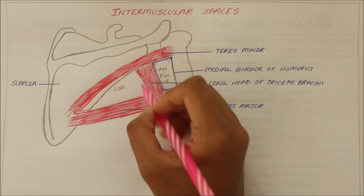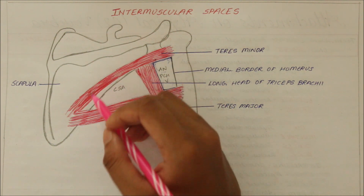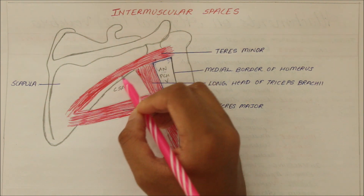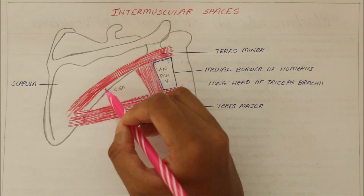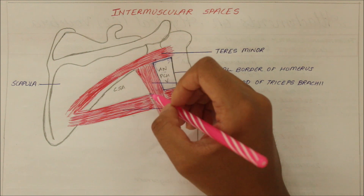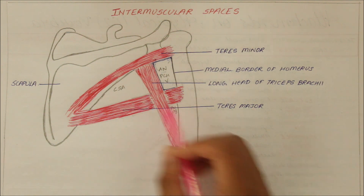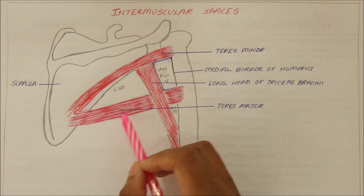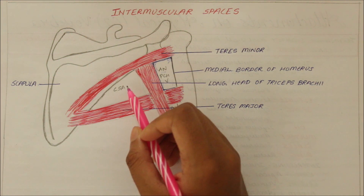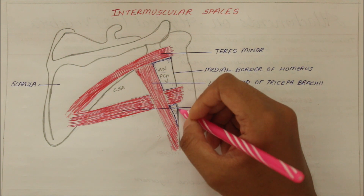Now let's move on to the upper triangular space. Its boundaries are: superiorly, the inferior border of the teres minor; laterally, the medial border of the long head of the triceps muscle; and inferiorly, the superior border of the teres major. The contents of this upper triangular space consist of the circumflex scapula artery.